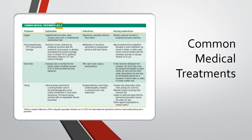Common medical treatments include oxygenation if they have hypoxemia, respiratory distress, or heart failure. Chest physiotherapy helps mobilize secretions, particularly after a procedure or operation. A chest tube might be needed, especially after open heart surgery. Pacing might also be a treatment for bradyarrhythmias, heart block, or cardiomyopathy. These are just some common medical treatments you might see.